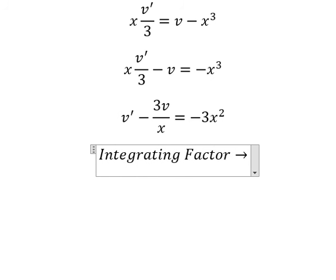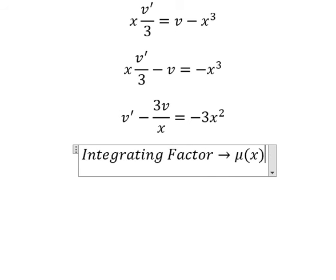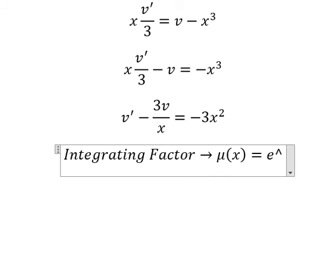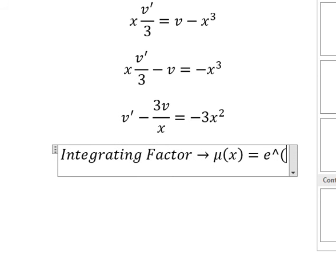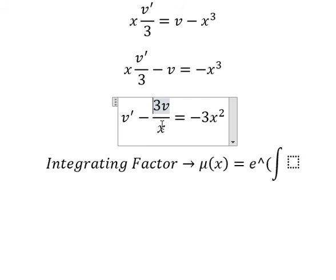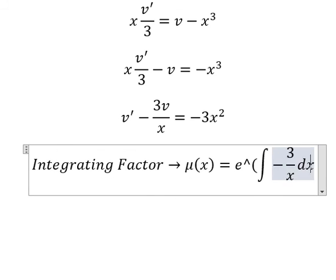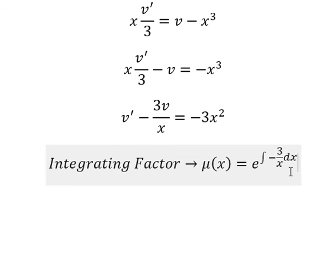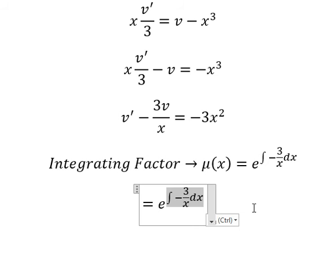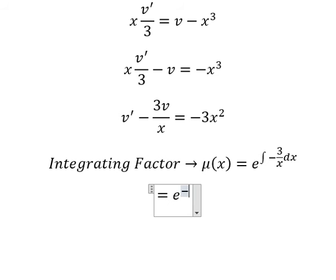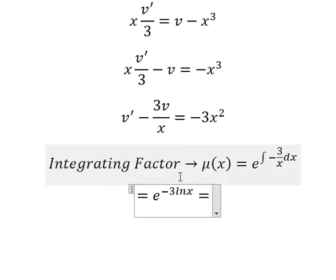So we need to find μ(s), which equals e to the power of the integral. We see that negative 3 over s is next to v — that is for the integrating factor. The integral of that gives us negative 3 times ln(s), and we bring the negative 3 inside the natural log.